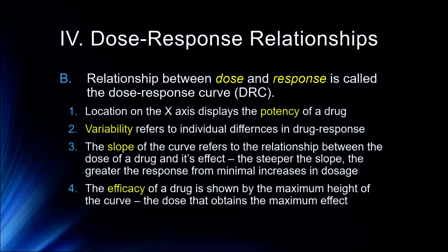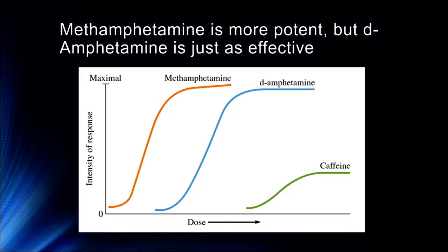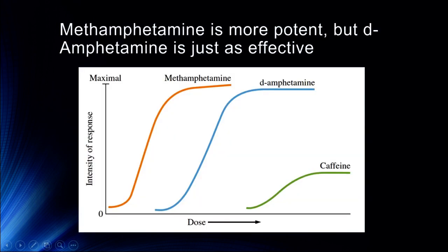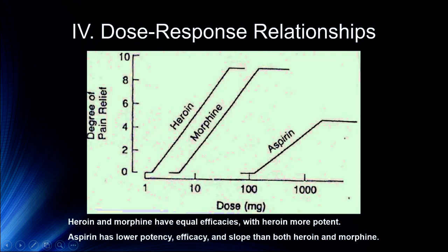The efficacy of a drug is shown by the maximum height of the curve — that is the dose that obtains the maximum effect. Caffeine is less efficacious because the maximum height of its curve doesn't reach where we see with dextroamphetamine or methamphetamine. We get similar dose-response curve comparisons if we look at aspirin versus opioids. The maximum effect from aspirin is nowhere near the maximum effect from hydrocodone. Similarly, heroin has much greater potency compared to morphine, with very similar slopes and maximal effects between those two, while aspirin has a much gentler slope and lower maximal effect.